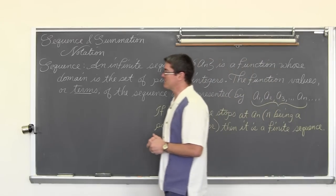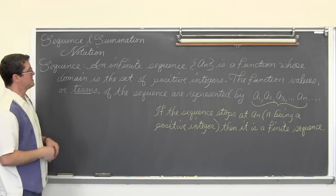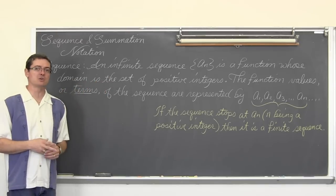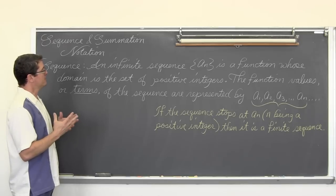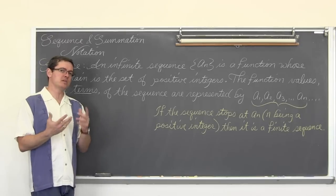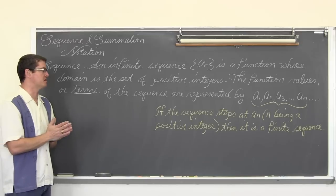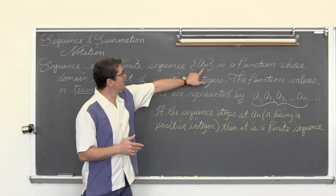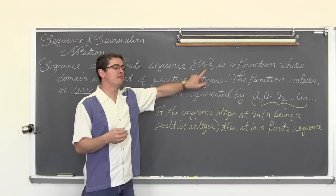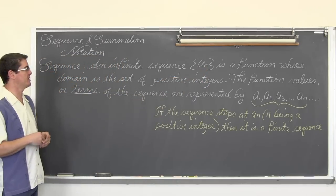For right now, let's get this basic idea of a sequence out of the way. An infinite sequence, a sub n, is a function whose domain is the set of all positive integers. That is, we are talking about the values of n. This is brand new notation, but it is actually a fairly simple topic. The notations are all new though, so it can be confusing. The sort of independent variable — the domain — is this value of n. You will see how this works with examples.